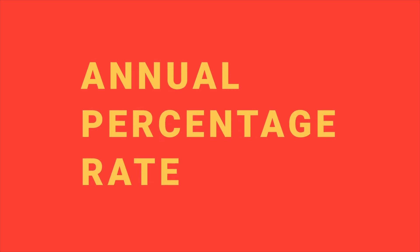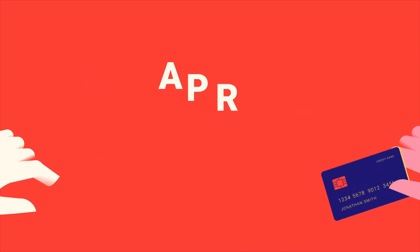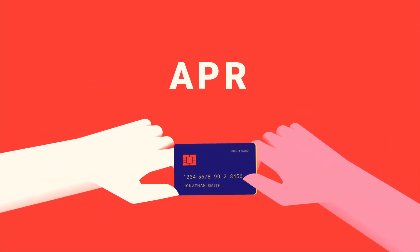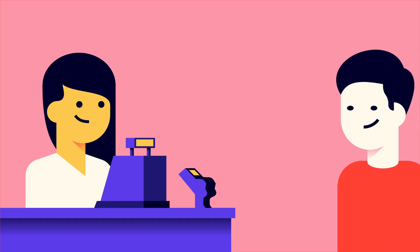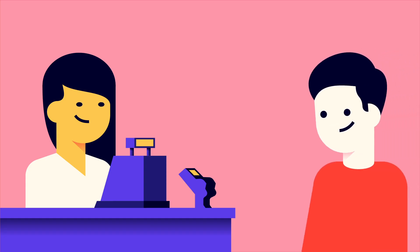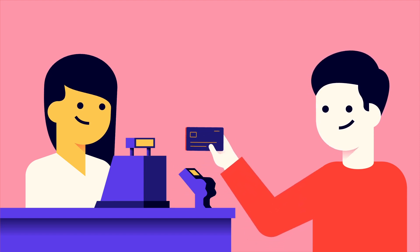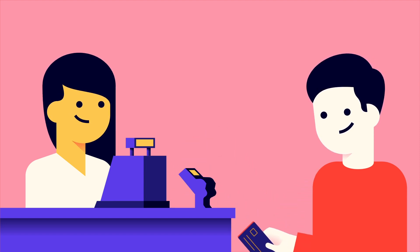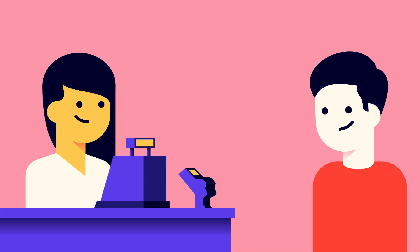Annual Percentage Rate, or APR for short, is the number your credit card company uses to calculate interest on your outstanding balances. Think of APR as the price you pay to borrow money. You make purchases on credit, and your credit card company charges interest based on your APR on the balance if you don't pay in full each month.